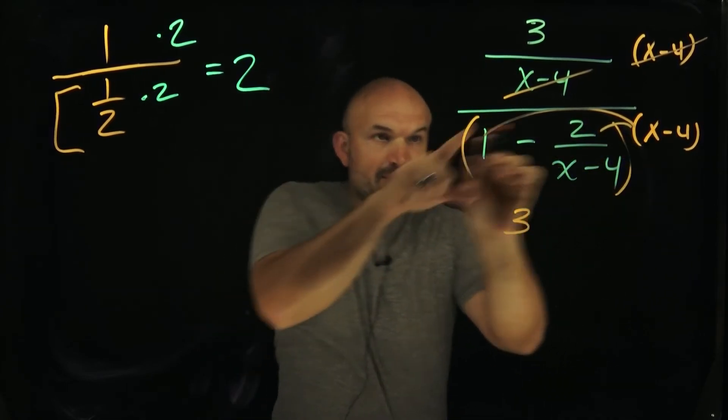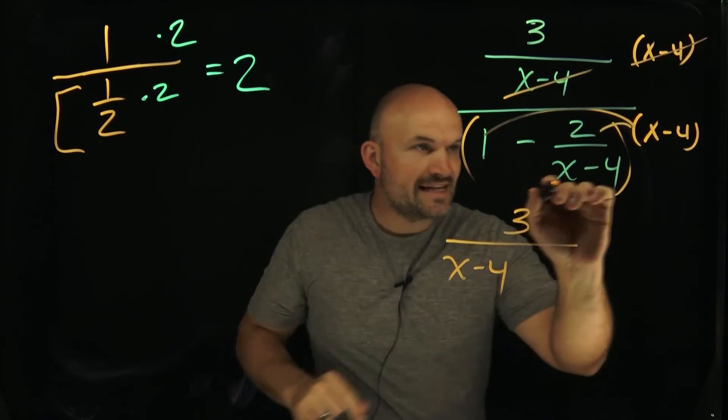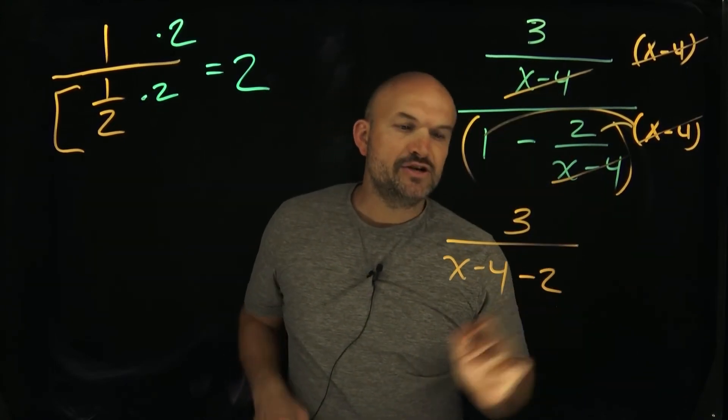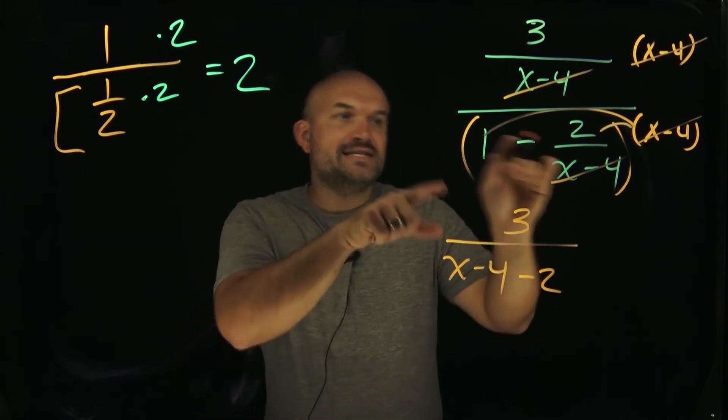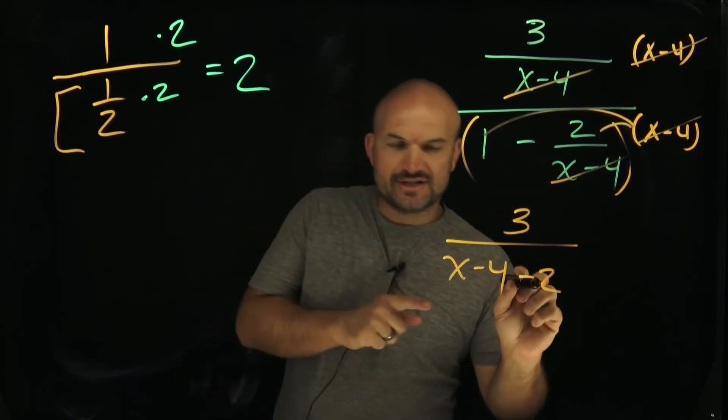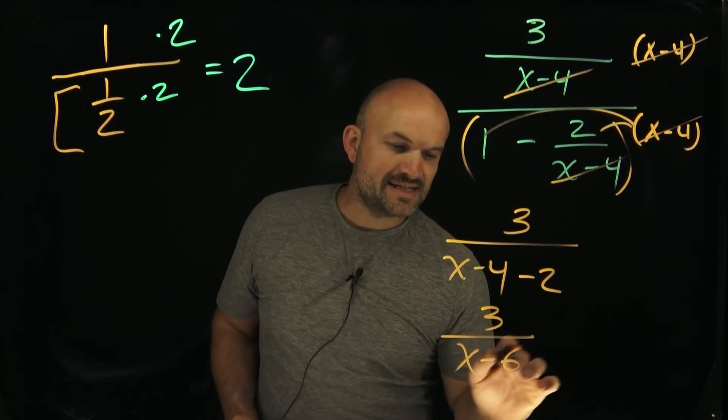Over here, the x minus 4 times 1 is going to leave me with an x minus 4. And then here, the x minus 4s are going to divide out. And that's going to leave me with a minus a 2. Now, what I can do is just simplify this expression a little bit more. I can do x minus 4 minus 2 is going to be x minus 6. So it's a 3 divided by an x minus 6.